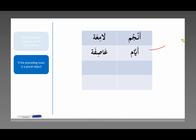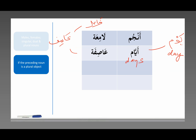Ayyam — ayyam is the plural of yawm, which means a day, as in 24 hours. Plural ayyam — days. Asifa — this is from asif, which is like fa'il, a common pattern for adjectives. Asifa means windy, having a lot of wind — you can even say stormy. Ayyam asifa — windy days.